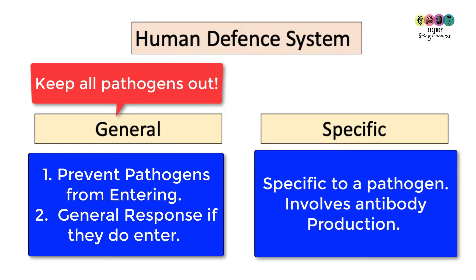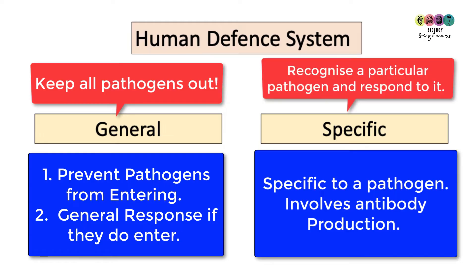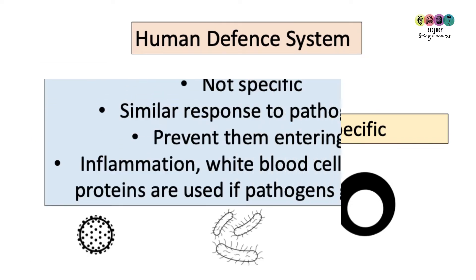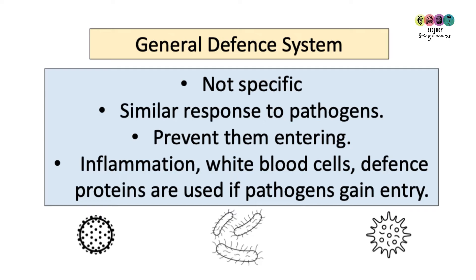Whereas the specific defense system is a very tailored approach to a specific or particular pathogen, and it involves the production of antibodies. For the rest of the video we're concerned with the general defense system — it's not specific, it's a similar response regardless of what the pathogen is, and most of it is tasked with preventing pathogens from entering in the first place.